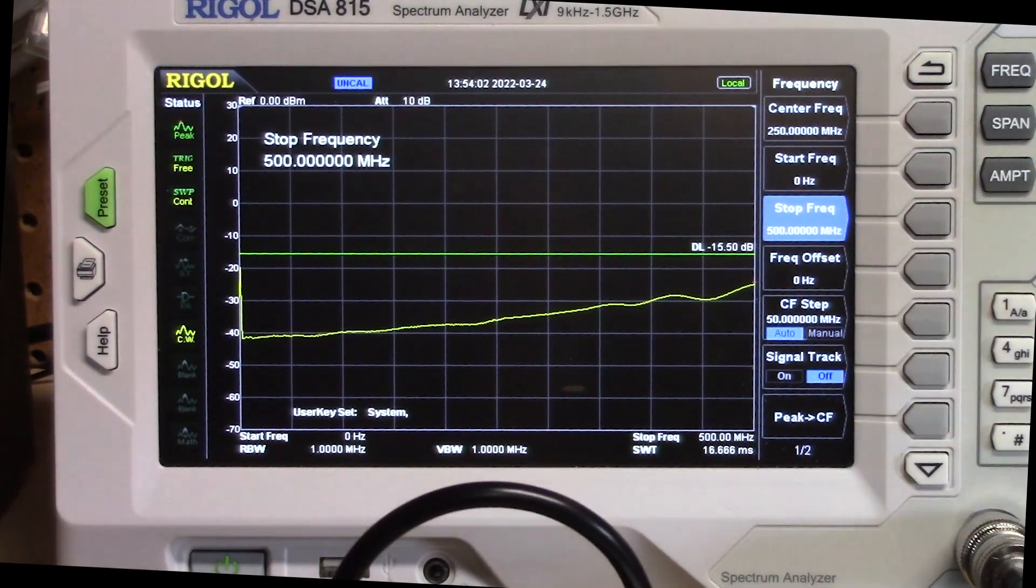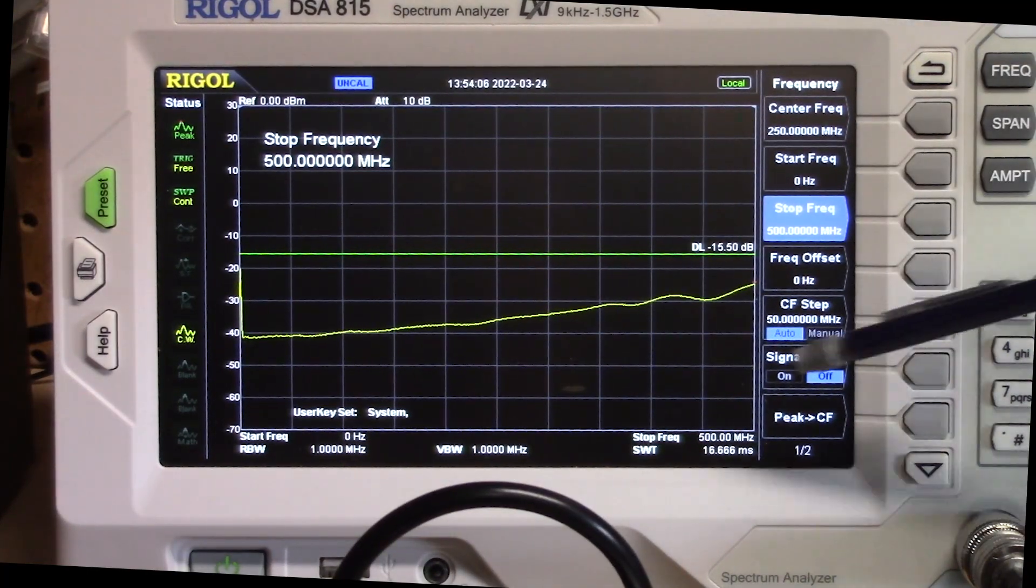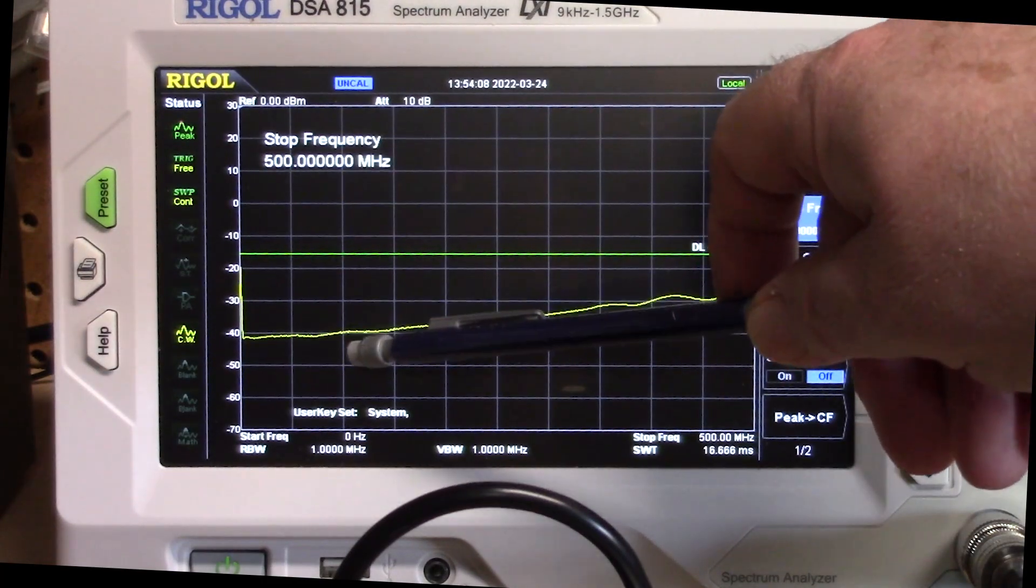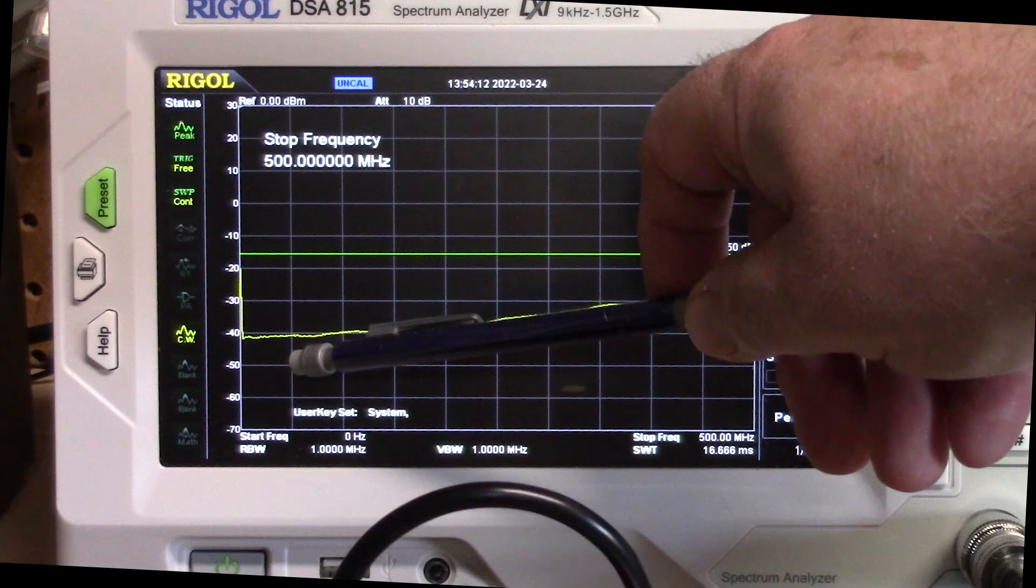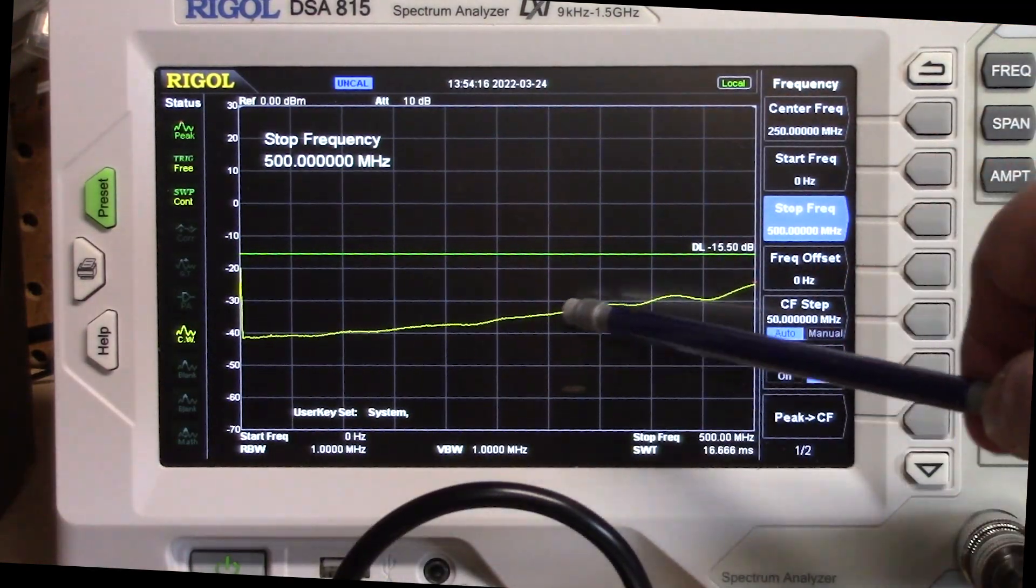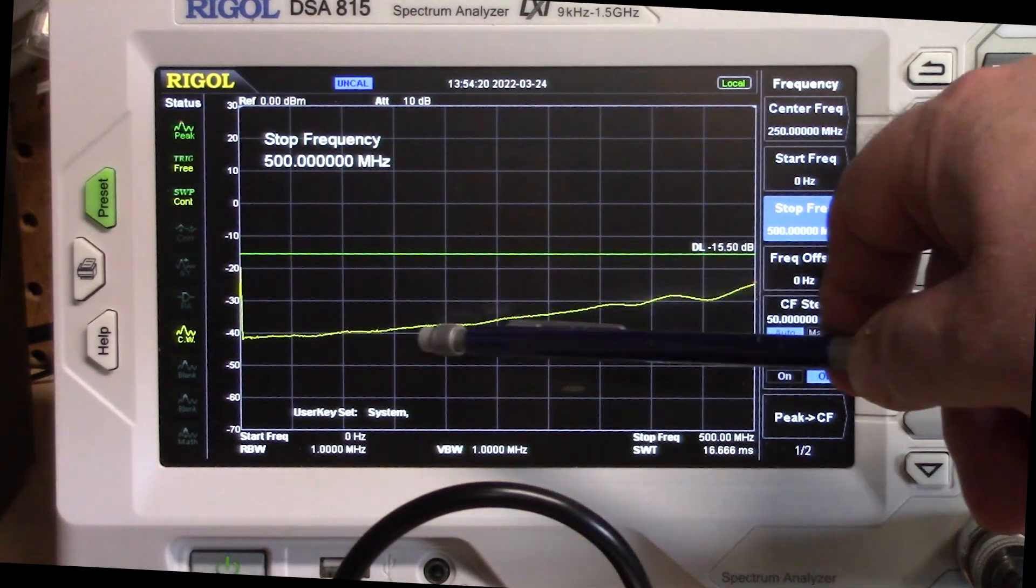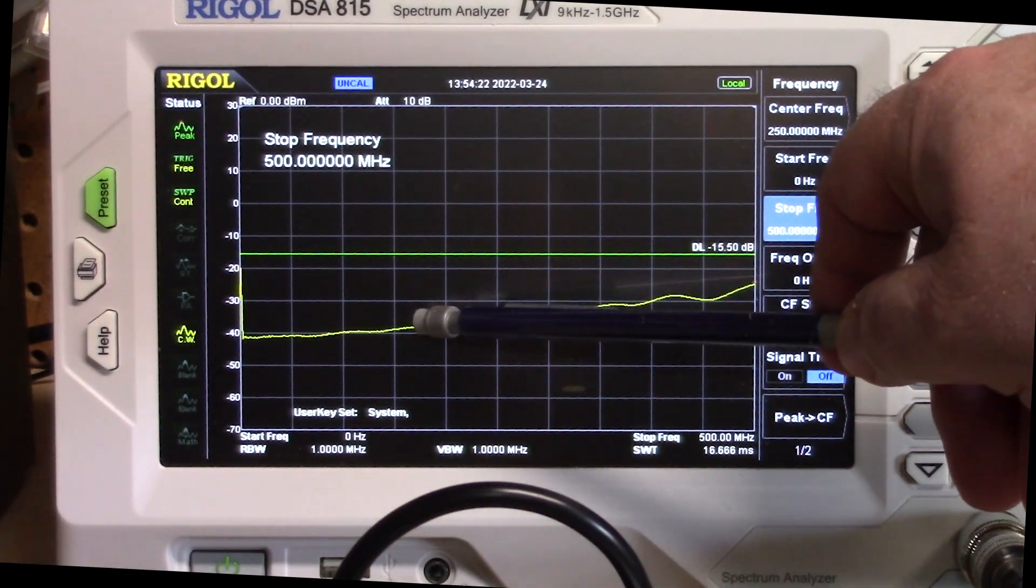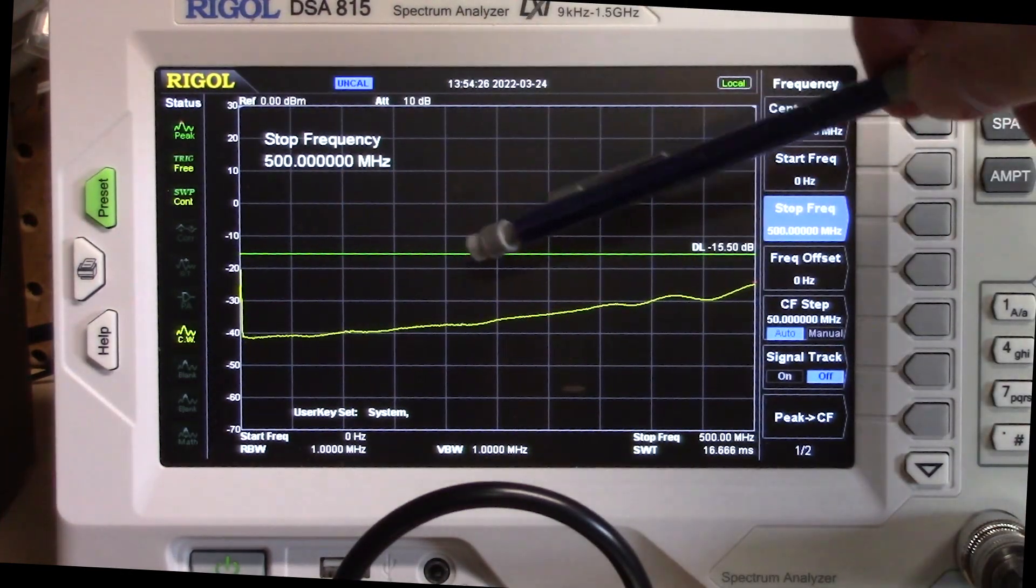Okay. So I've got the frequency range set from zero to 500. And you can see here down on the lower end, this is absolutely giving us actually a little better than 40 dB. And for whatever reason, it eases up as we go up to 500 megahertz. So each of these blocks is 50 megahertz. There's 10 blocks. We've got a 500 megahertz range up here.